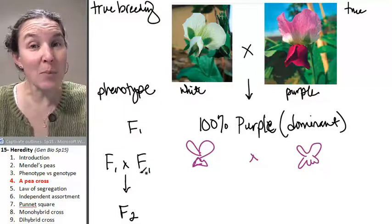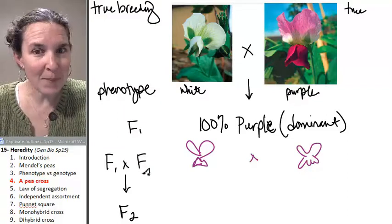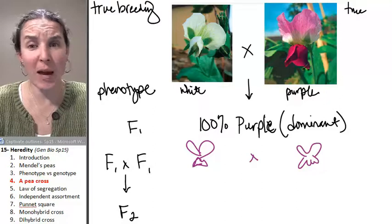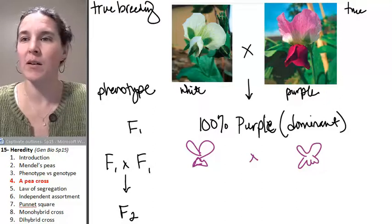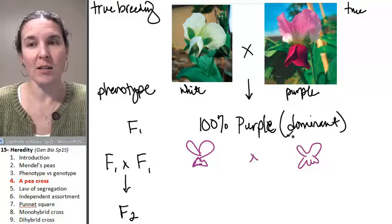Are you going to guess that these pea flowers are now true breeding? Well, if we follow this pattern, then we certainly would expect 100% purple babies.